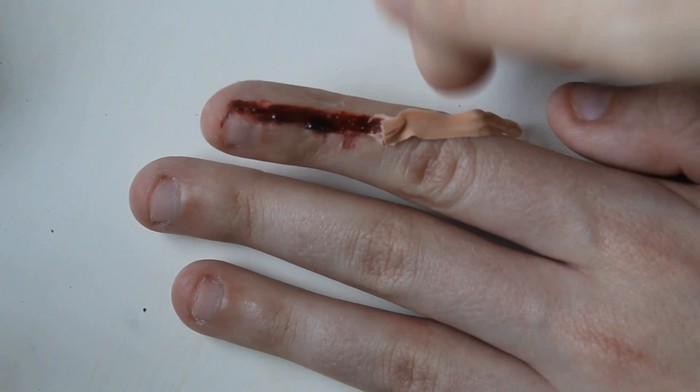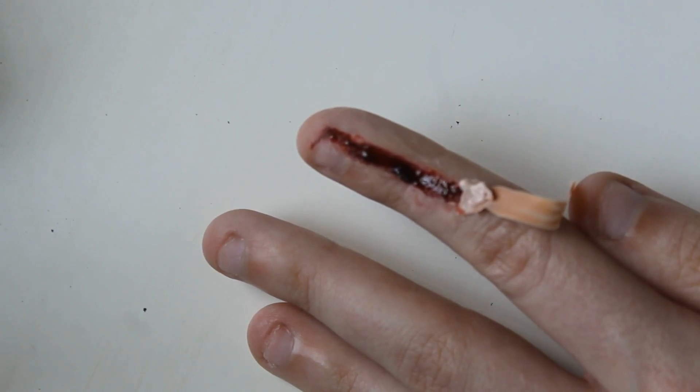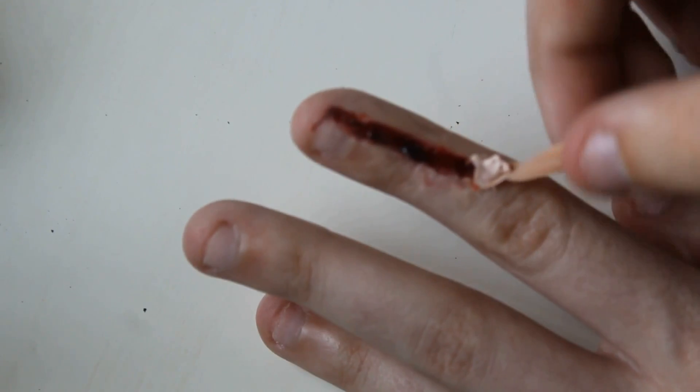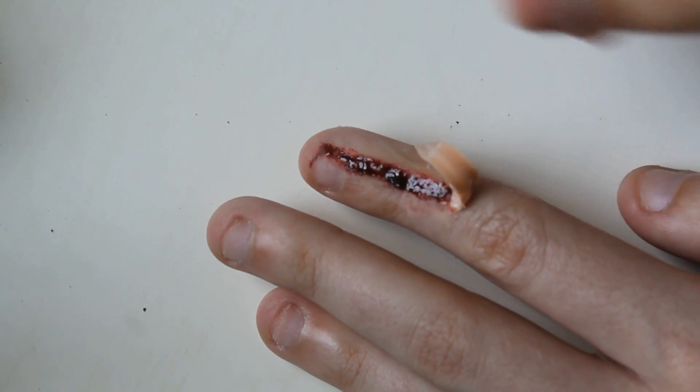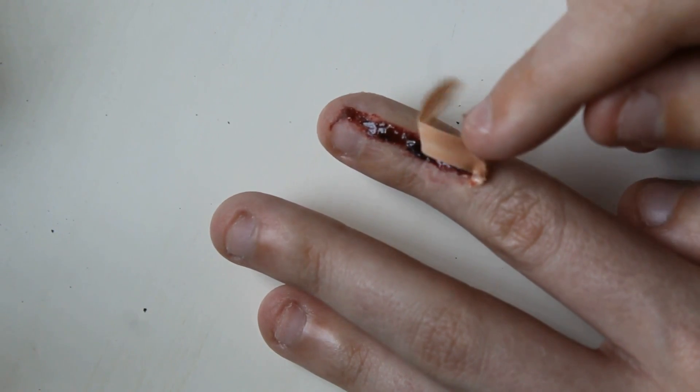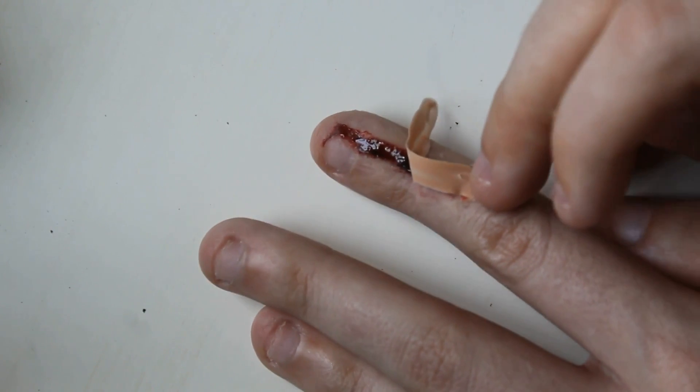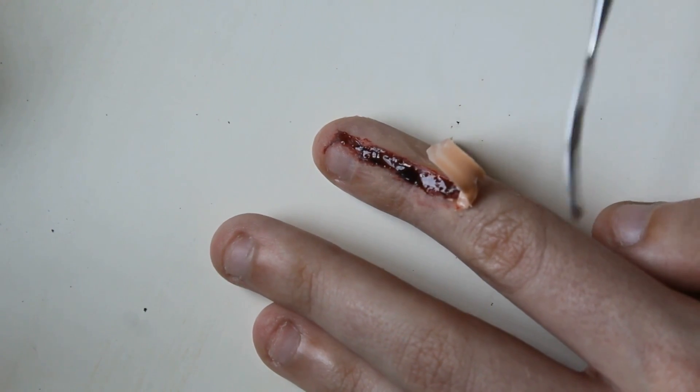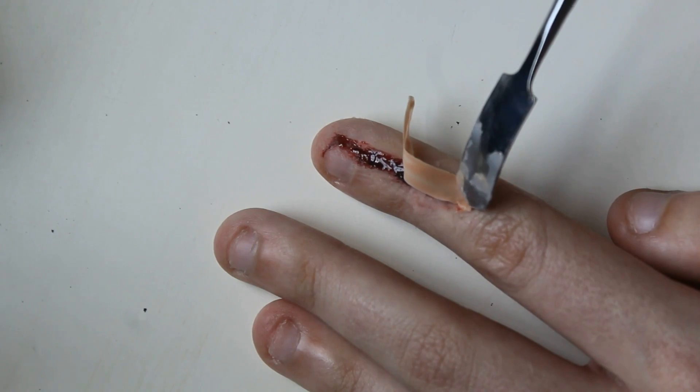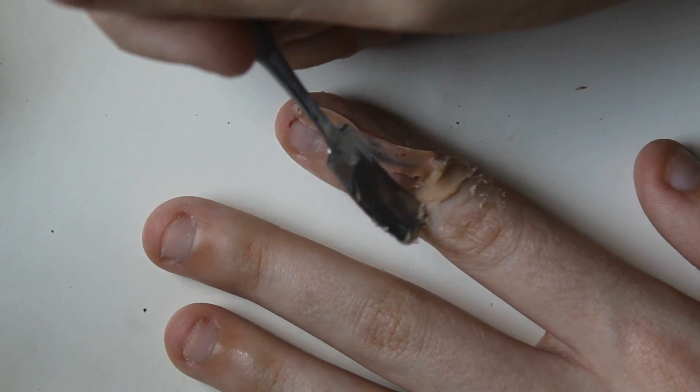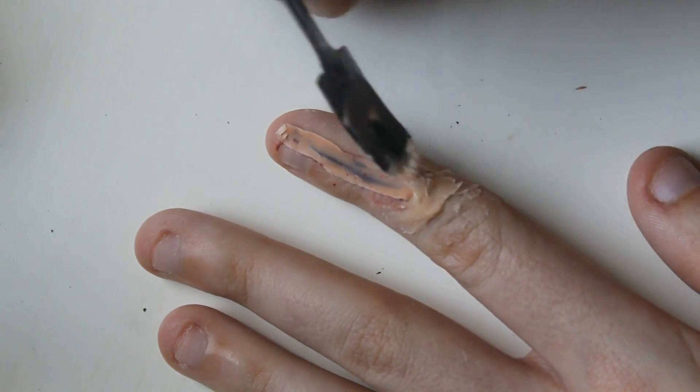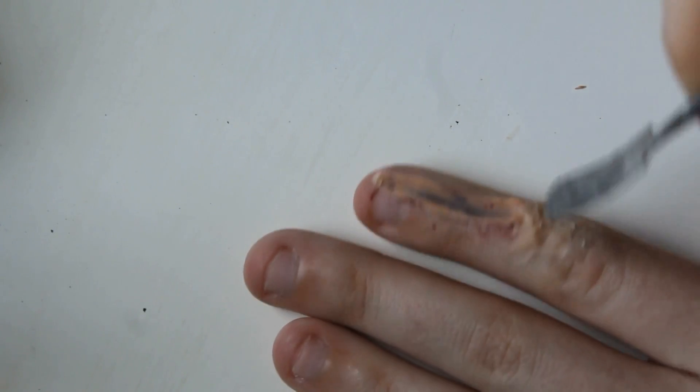I fixed it by flipping over the skin and using liquid latex to hold it down. That seemed to work, but it looked a little weird, so I went over the edges with some scar wax and that did the trick. Just make sure if you do the same thing, you use the stippling sponge or brush to add texture so it looks more realistic.